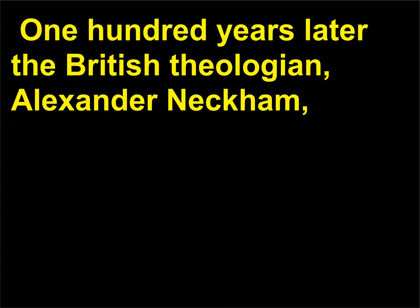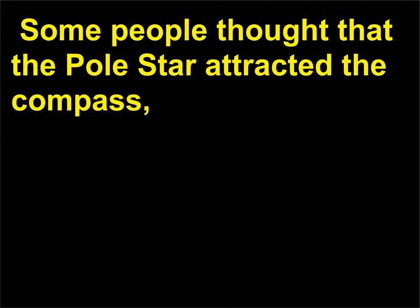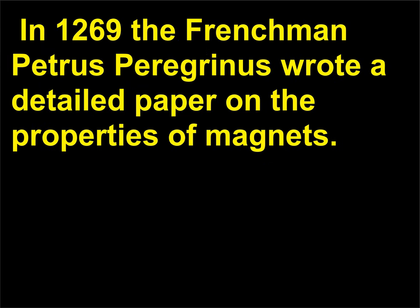100 years later the British theologian Alexander Neckham described the compass and how it could be used to aid navigation. Some people thought that the pole star attracted the compass, while others thought that the source was a magnetic island near the North Pole. In 1269 the Frenchman Petrus Peregrinus wrote a detailed paper on the properties of magnets.